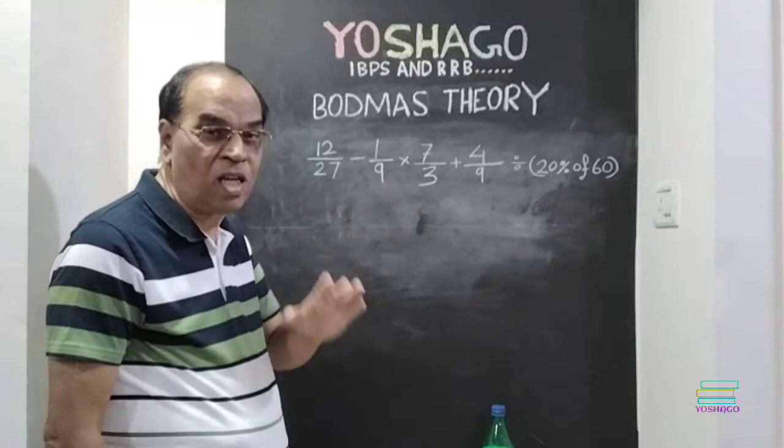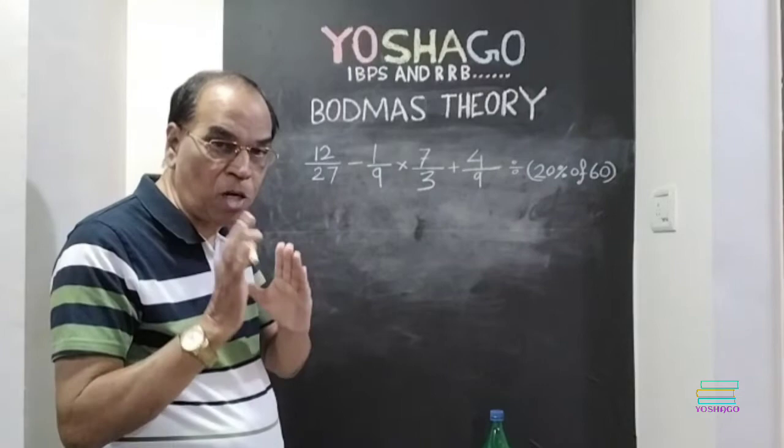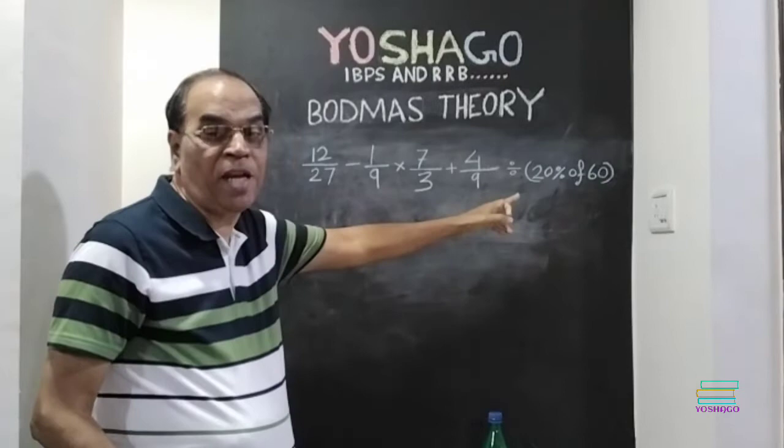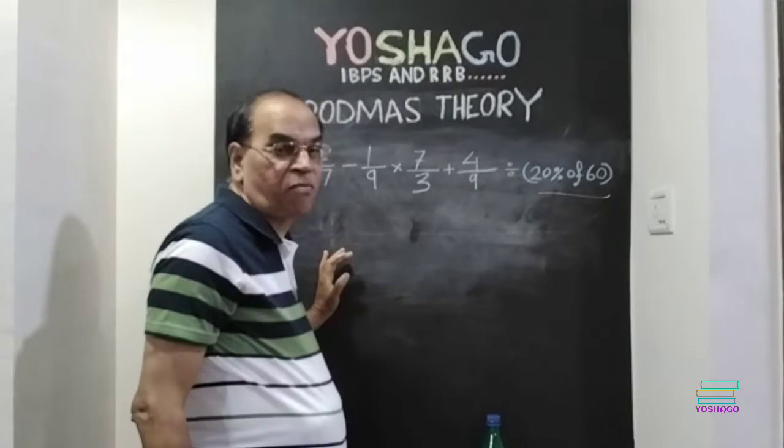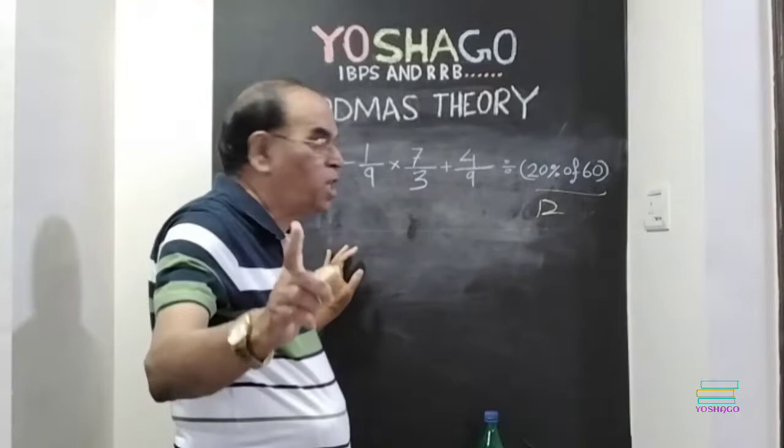Then, how to solve this problem? First, what we have to do, according to BODMAS theory, remove the bracket and of. Here, bracket and of simultaneously will go. 20 percent of 60, how much? 12, right? 20 percent of 60 is 12.